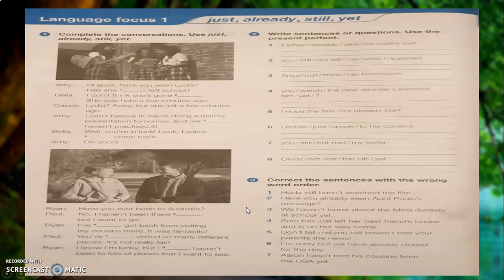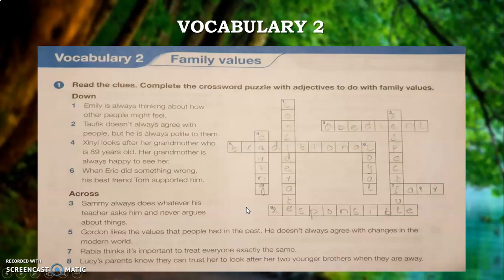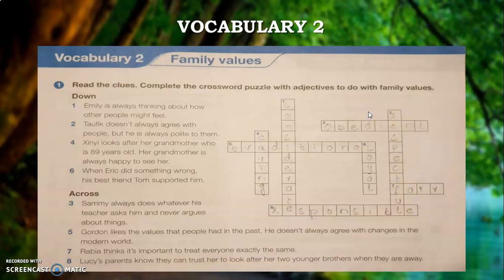Now moving to our third topic, Vocabulary 2: Family Values, on page number 9. Question number 1: read the clues and complete the crossword puzzle with adjectives to do with family values. I have solved this crossword puzzle for your convenience and will read the first two. Number 1 — Emily is always thinking about how other people might feel — the answer is considerate. Number 2 — Taufik doesn't always agree with people but he is always polite to them — so the answer must be respectful. You must have understood how to solve the crossword puzzle. Fill the remaining answers using the clues given.